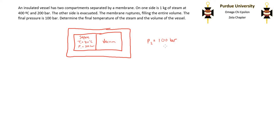The first step in solving this problem is to write down the first law equation and to simplify it as much as we can. The first law is that the change in the internal energy of the system is equal to the heat out of the system plus the work done on the system. Our vessel is insulated, so there's going to be no heat transfer to or from the inside of the vessel, so our Q term goes to zero. We also know that there is no work done on the system to rupture the membrane, so the work term is also going to go to zero. Simplifying, we get that there is no change in the internal energy throughout this process.